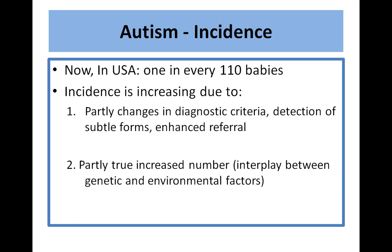Regarding the incidence of autism, in the USA it is recorded to be one in every 110 babies. This incidence is increasing because of two things: changes in the diagnostic criteria, detection of subtle forms, enhanced referral, and due to the increased number of actually detected cases, which denotes the interplay between genetic and environmental factors.